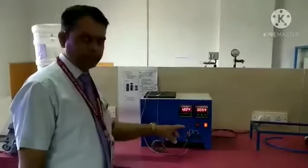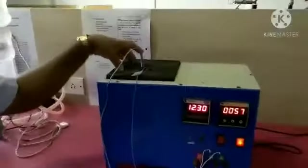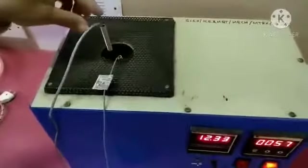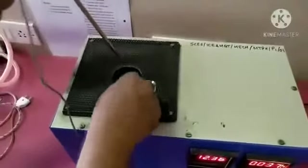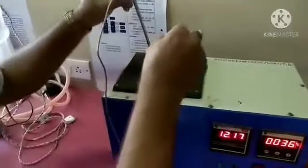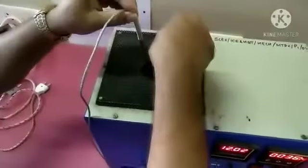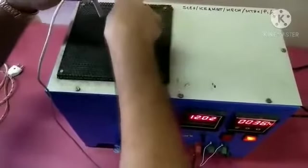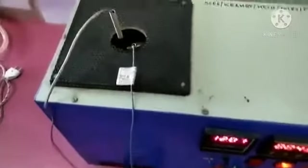So there is an arrangement of fan and heater. Here you can see the thermocouple and RTD. This can be put in the coil. There are holes arranged to put the thermocouple and RTD.